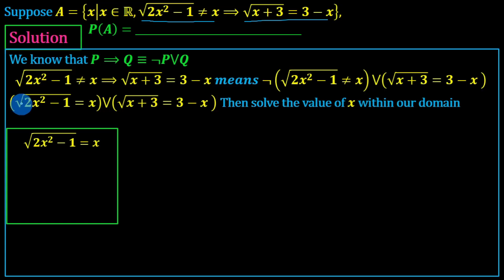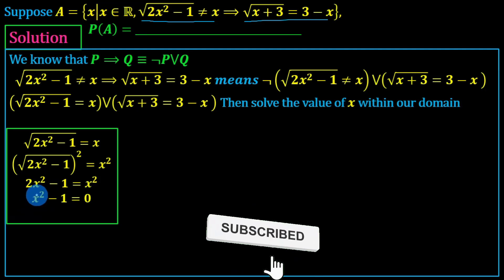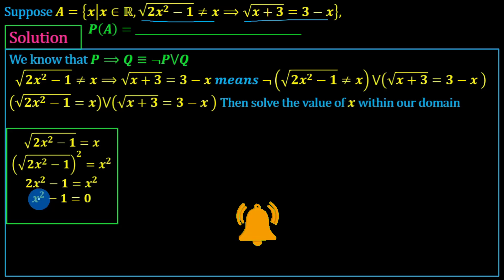We will use the square root of 2x squared minus 1. The square of 2x squared minus 1 is equal to x squared. So 2x squared minus 1 is equal to x squared. 2x squared minus x squared minus 1 is equal to zero. So x squared minus 1 is equal to zero.